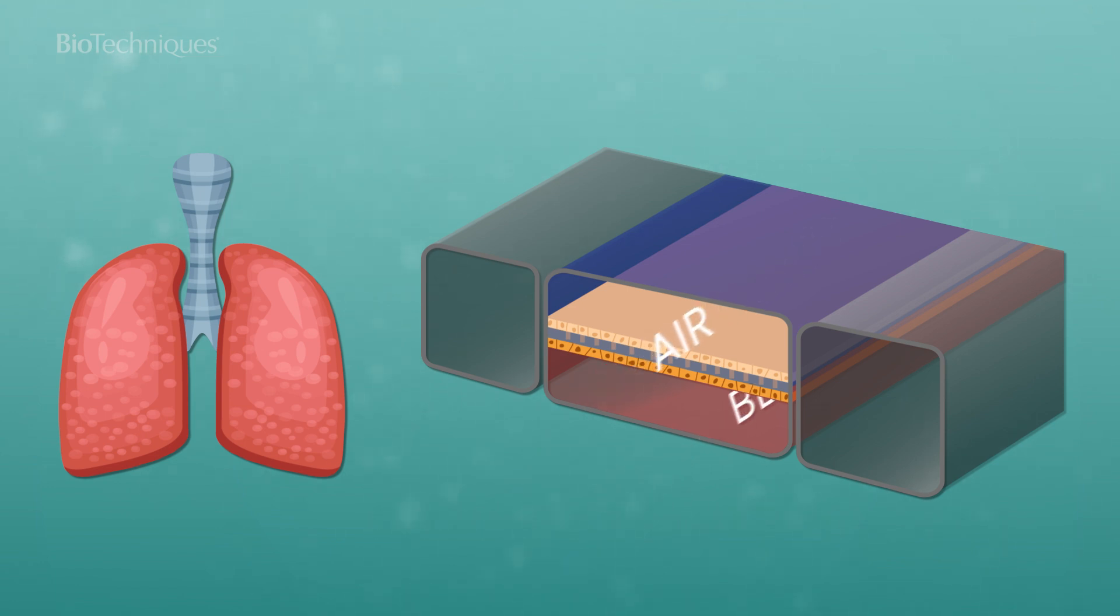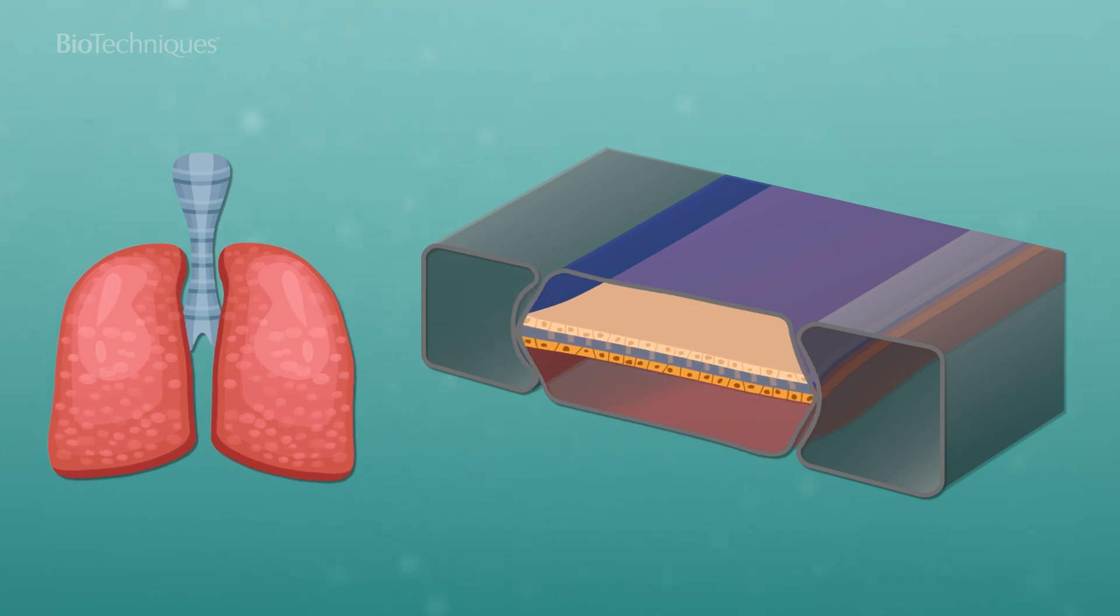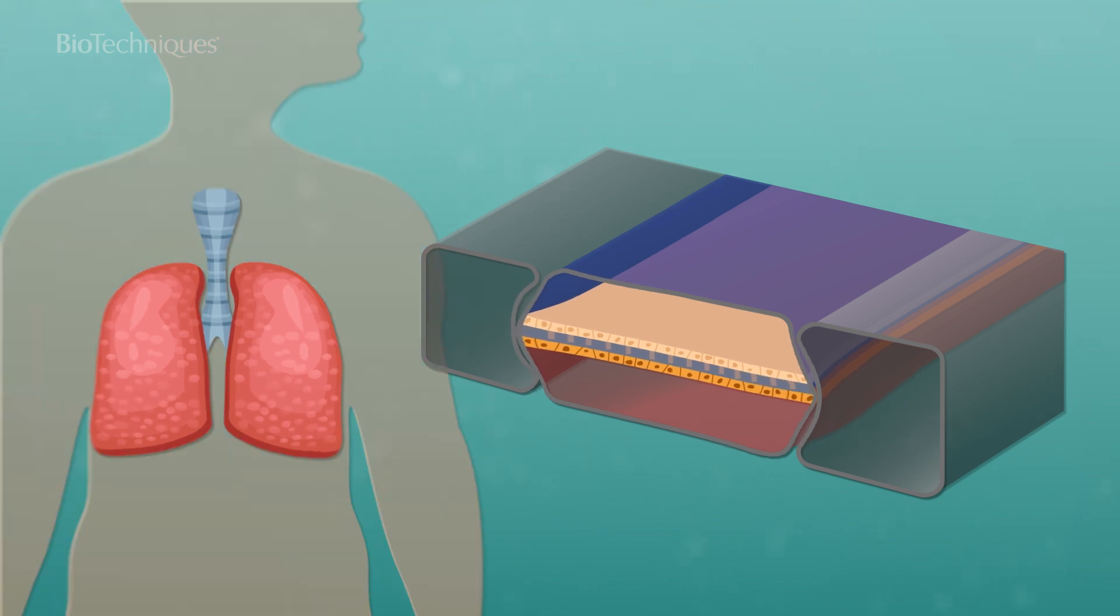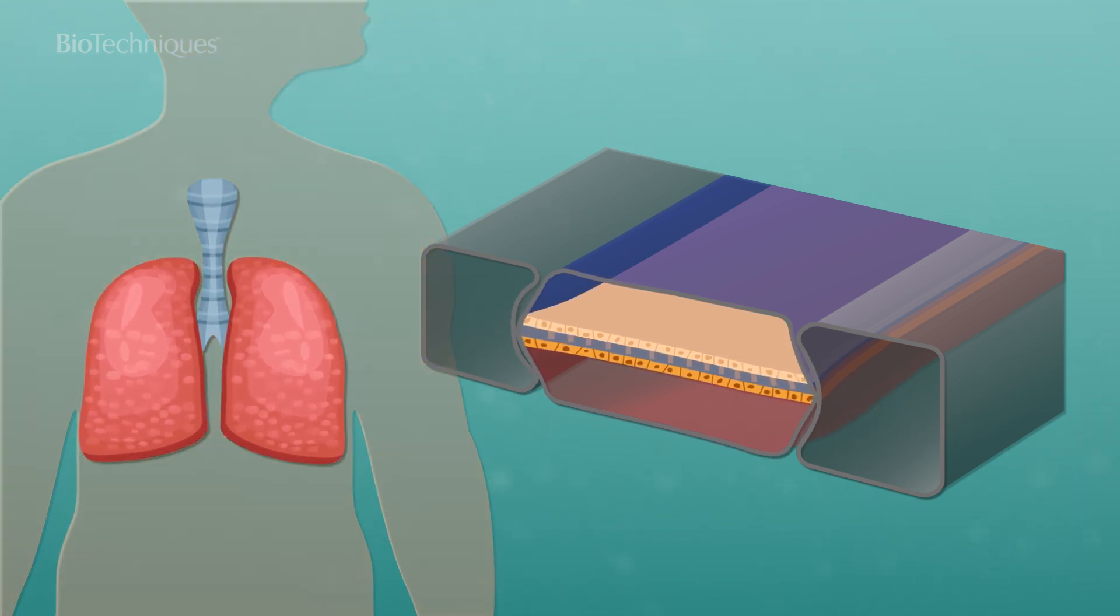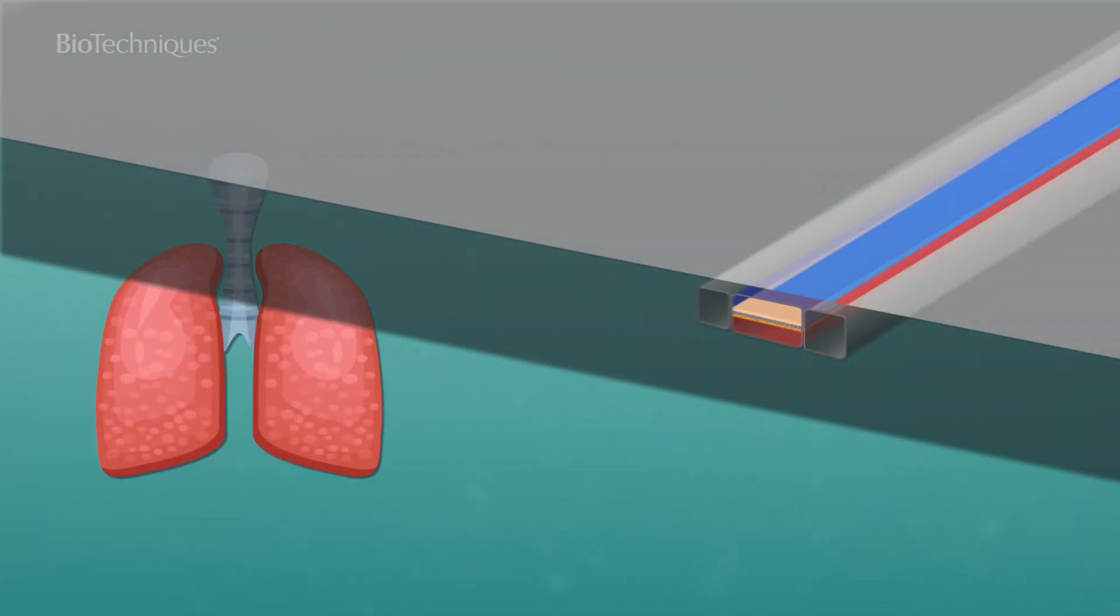Fluid flows through the channels to simulate blood circulation, oxygen exchange and nutrient delivery. By integrating biomechanical forces such as cyclic suction in a lung-on-a-chip model to mimic breathing, the models allow cells to behave as they would inside the body, providing unprecedented biological relevance.